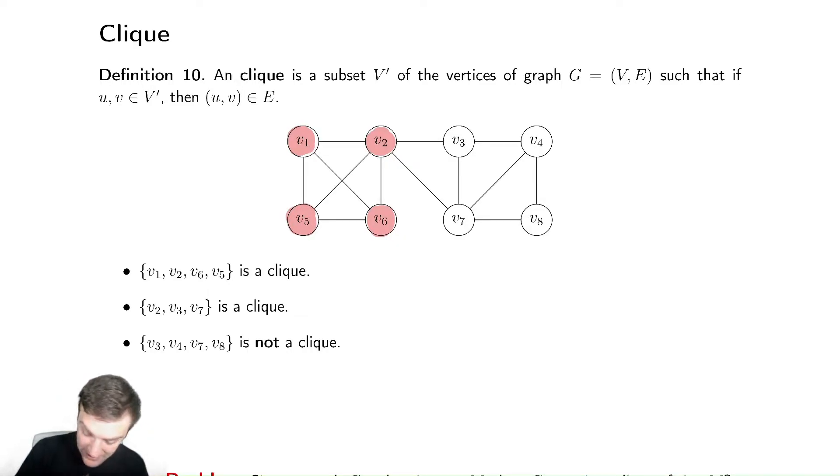Notice that V1 is connected to 2, 6, and 5. V2 is connected to 1, 5, and 6. 6 is connected to 1, 2, and 5. 5 is connected to 1, 2, and 6. So they're all connected to each other. It is a valid clique.